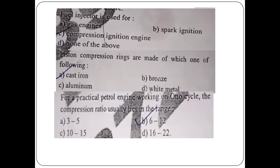The piston compression rings are made of which one of the following? The piston compression rings are made of cast iron.